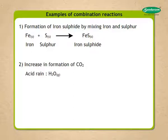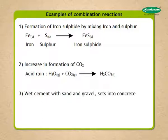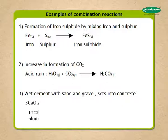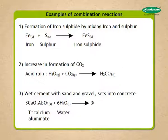H₂O(g) + CO₂(g) → H₂CO₃(l). Example 3: You must have observed at new construction sites that wet cement with sand and gravel sets into concrete, which imparts strength to the building. The chemical equation for this is: 3CaO·Al₂O₃(s) + 6H₂O(l)